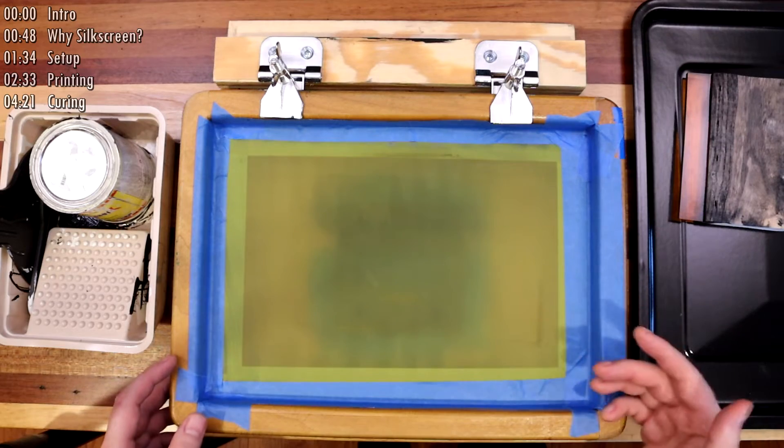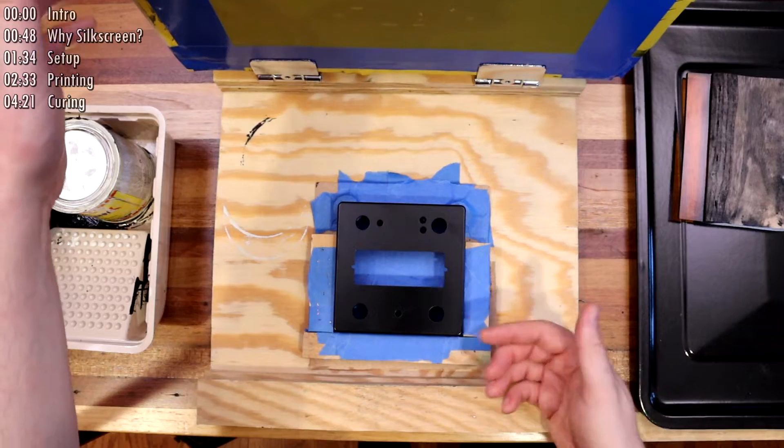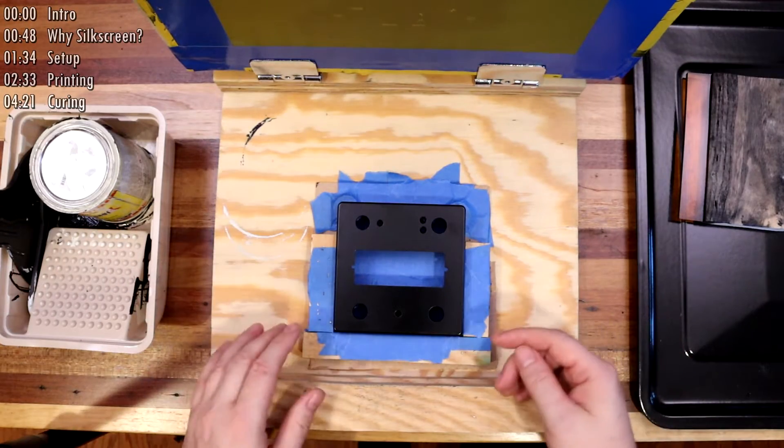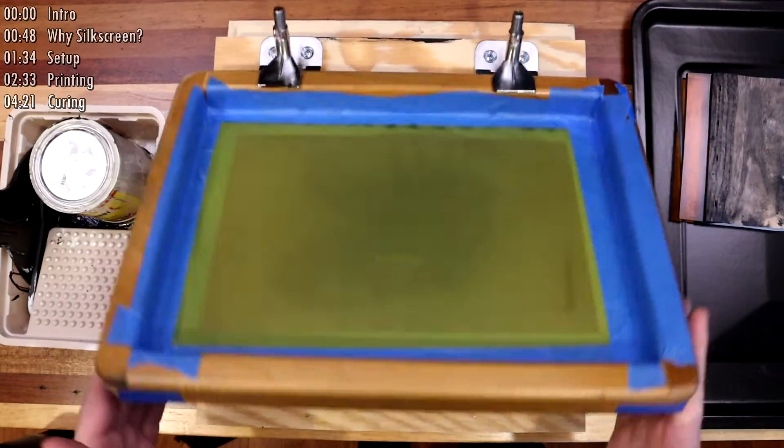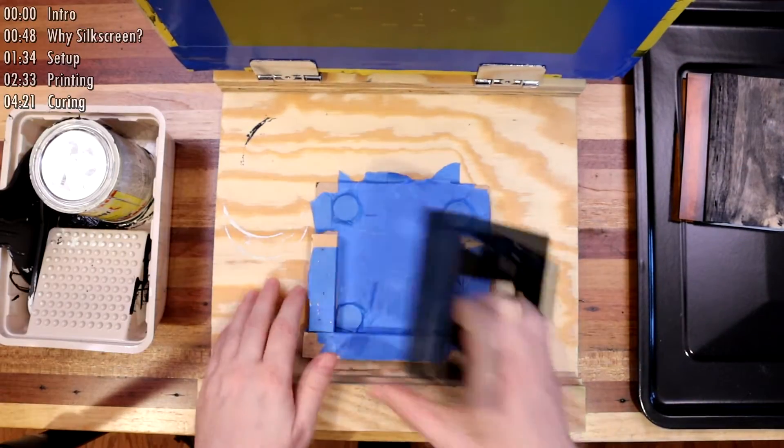The screen needs to be about a sixteenth of an inch above the printed surface, or about the width of one quarter. I got really close to the height I needed and I just taped some coins down to the surface to raise the enclosure to the exact height.